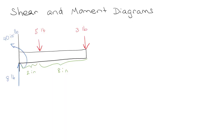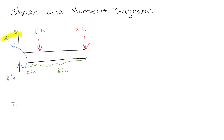Okay, so we're going to look at shear and moment diagrams. This is an example I've used a couple of times. We've got a beam sticking out of a wall with a big support, and we previously figured out that we've got a reaction moment and a reaction force holding this beam up.